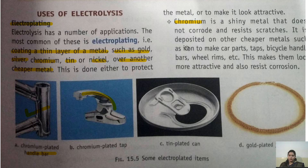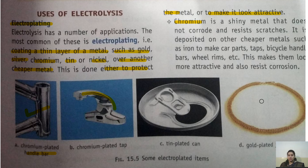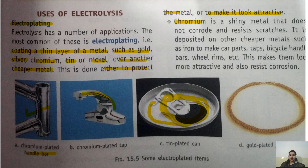Electroplating is a process in which a thin layer of a metal is coated over another cheaper metal. This is done either to protect the metal or to make it look attractive. In the case of gold-plated jewellery, we coat gold over the metal to make it more attractive. In the case of a tin-plated can — like a Pepsi or Coke can — there is a layer of tin because if it were made of iron, it would react with the drink inside and create harmful substances.